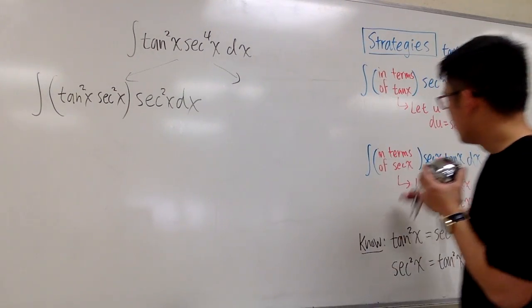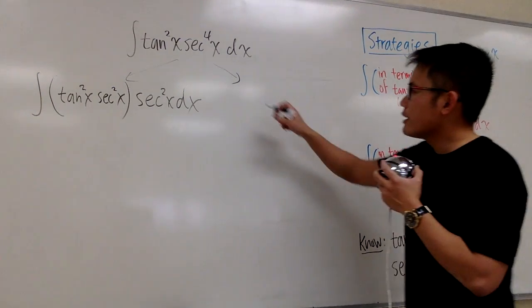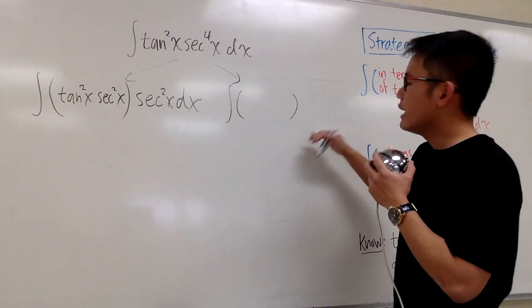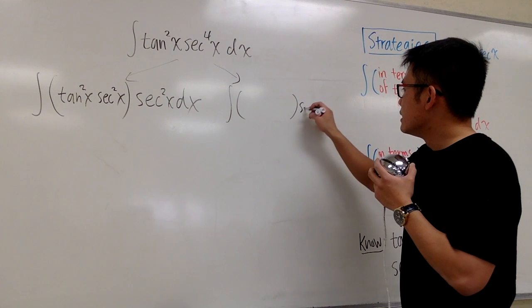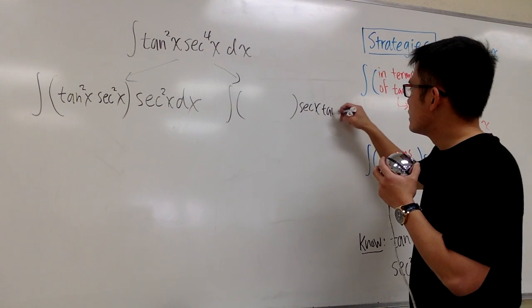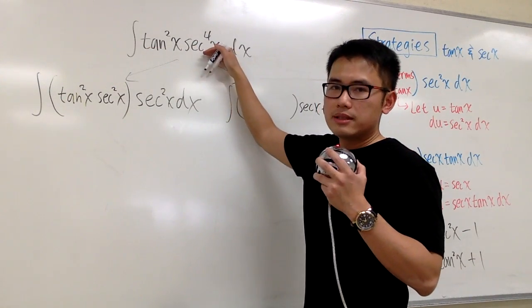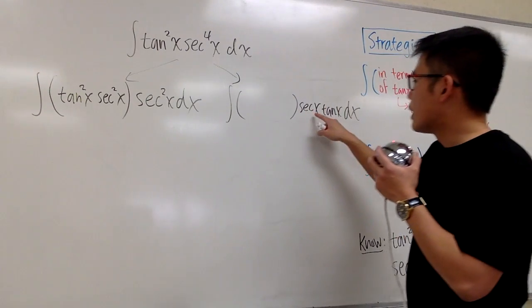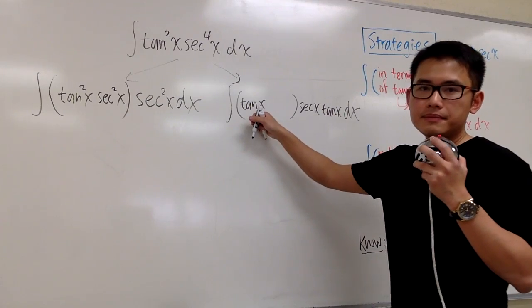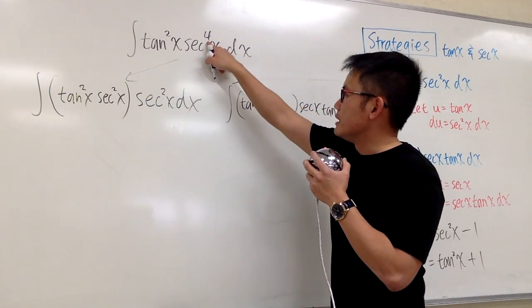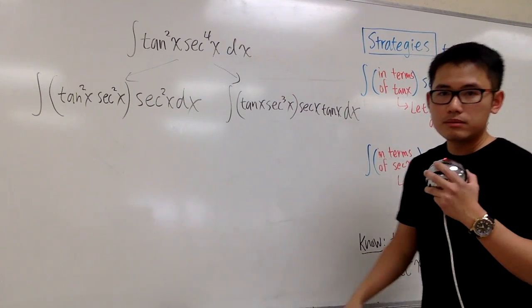Can we also make Strategy 2 happen? If I take out secant x times tangent x dx to put on the side, then from tangent squared I take one out, leaving just tangent x inside. From secant to the fourth power, I take one out, leaving secant to the third power inside.